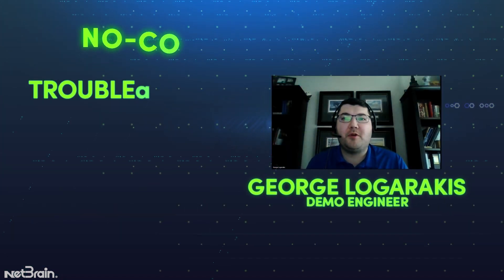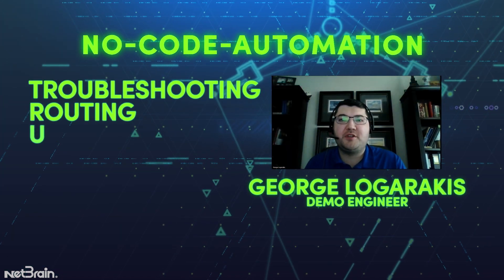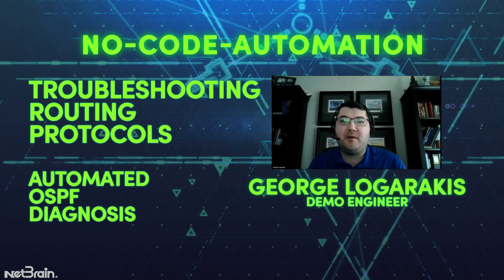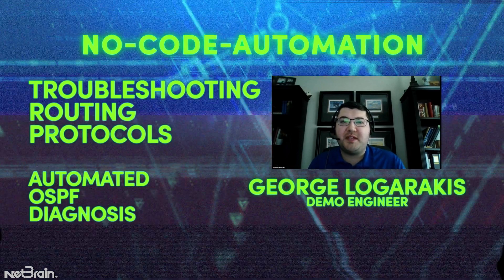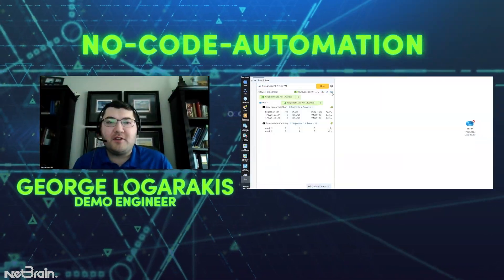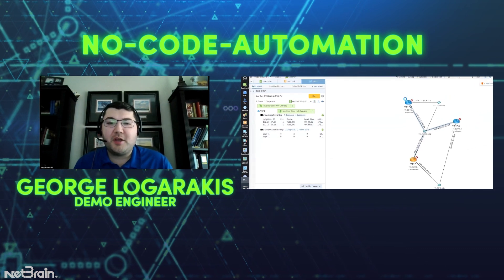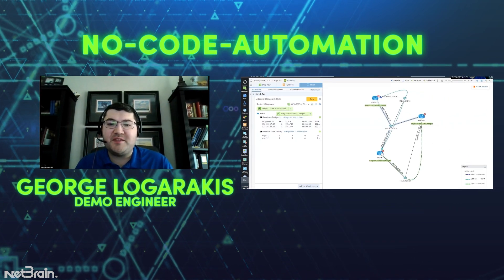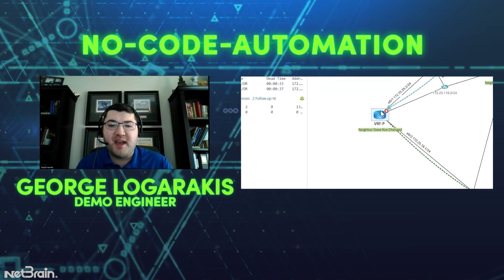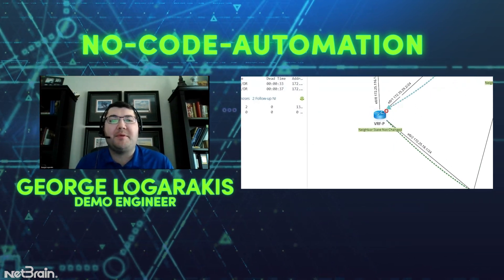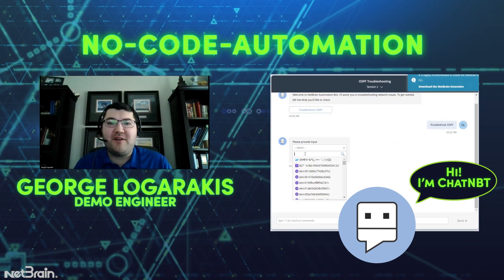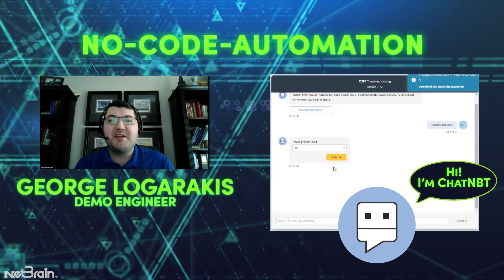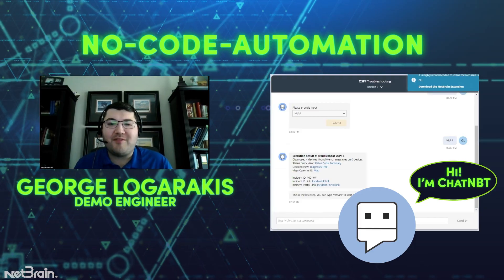Have you ever had to troubleshoot running protocol configuration across multiple devices in the network? In this video, I'm going to show you how you can use NetBrain's no-code automation to do just that. First, we're going to create an intent to automate OSPF diagnosis on a device, then extend this to its OSPF neighbors and draw them automatically on a map. Then I will show you different methods to leverage this intent to help automate your problem diagnosis — right to the power of no code. Let's dive right in.